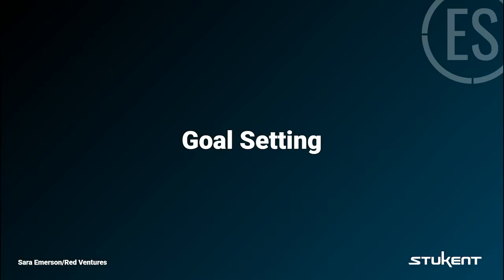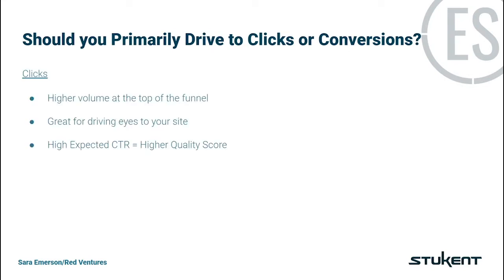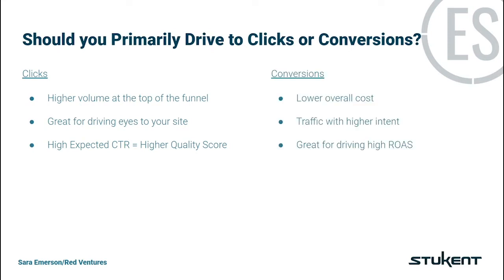Jumping into goal setting. Before starting to write any ad copy, consider what your business goals are and which part of the funnel you are trying to drive to. Click volume could be the correct goal if you are looking to drive a large amount of volume at the top of the funnel. These types of ads will get lots of eyes to your site, which can promote brand recognition. You'll also drive higher expected click-through rate, which is a component of quality score. Conversion volume is a good goal if you're aiming for lower marketing costs, want to limit traffic to only high intent users, and if your business is looking to drive higher ROAS.